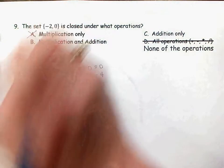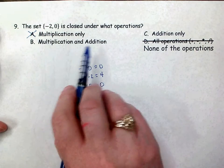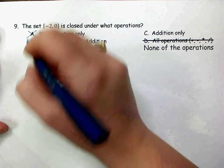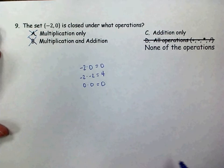So if it's not closed for multiplication, it can't be closed for multiplication and addition. So that eliminates A and B as possibilities.